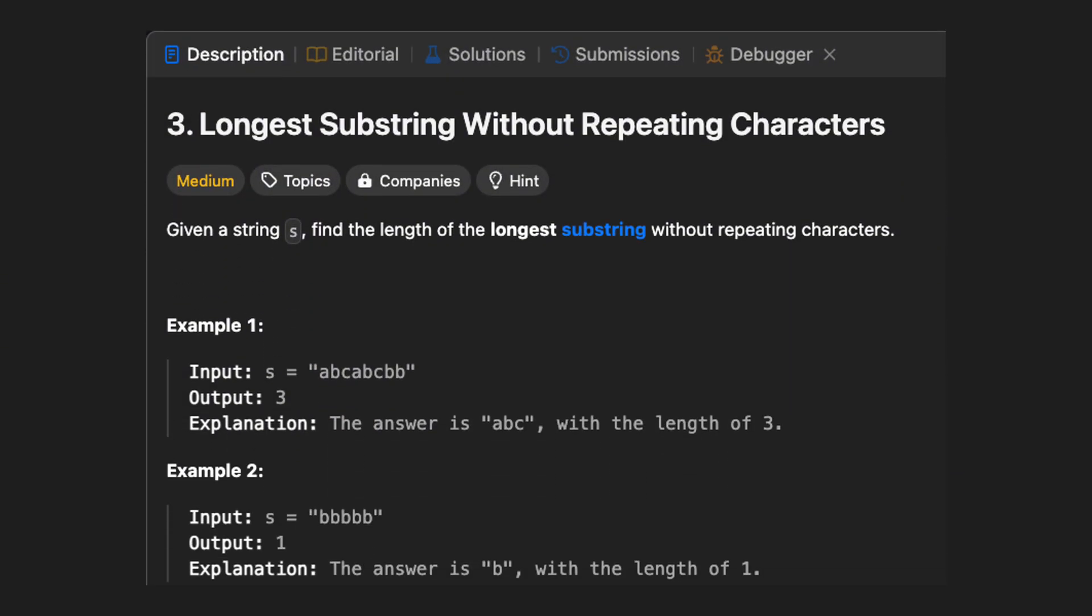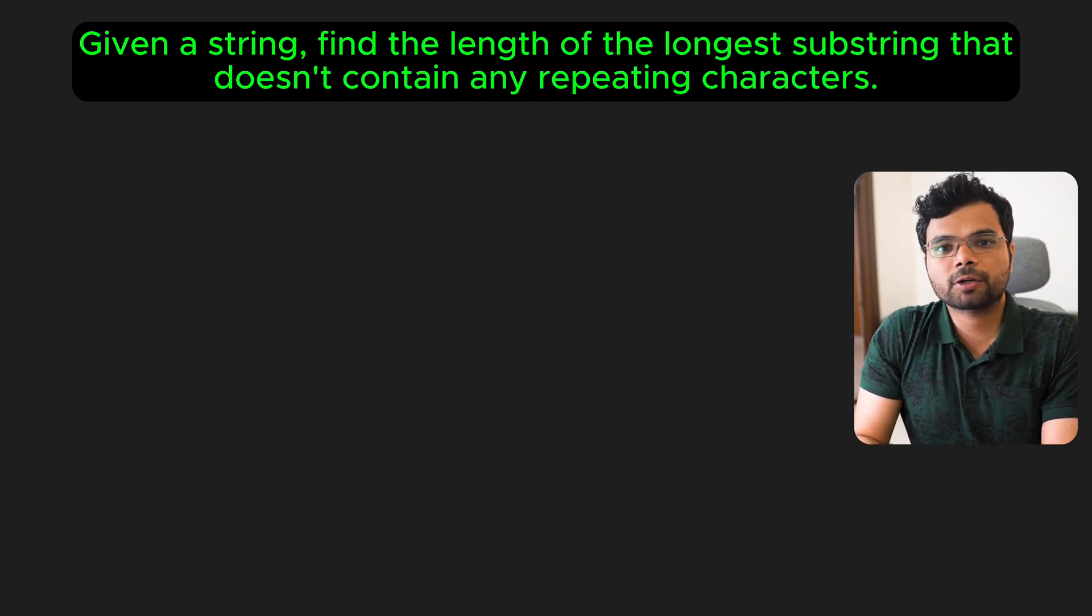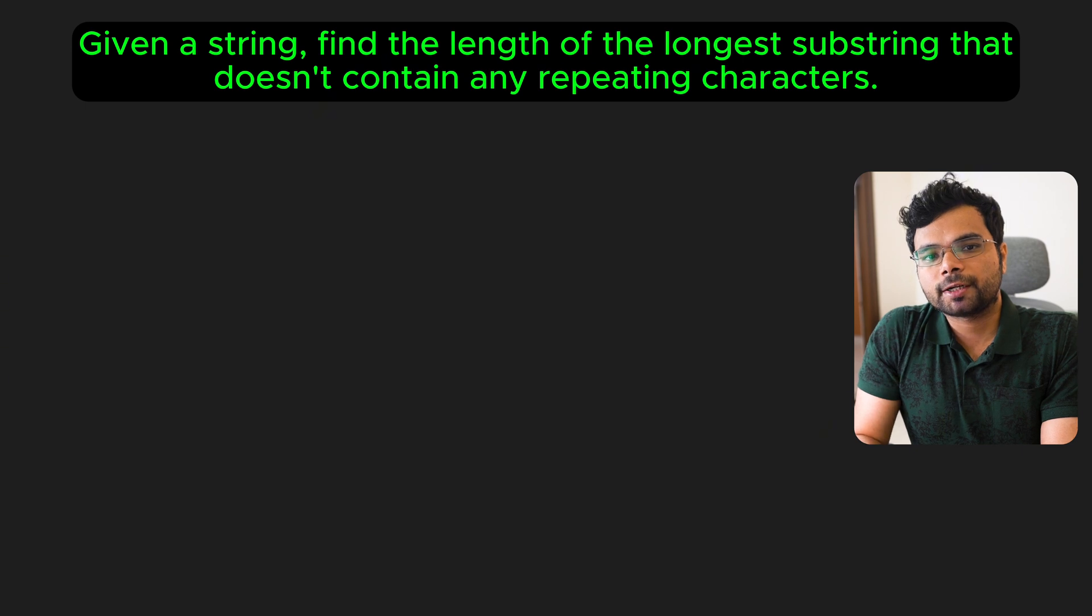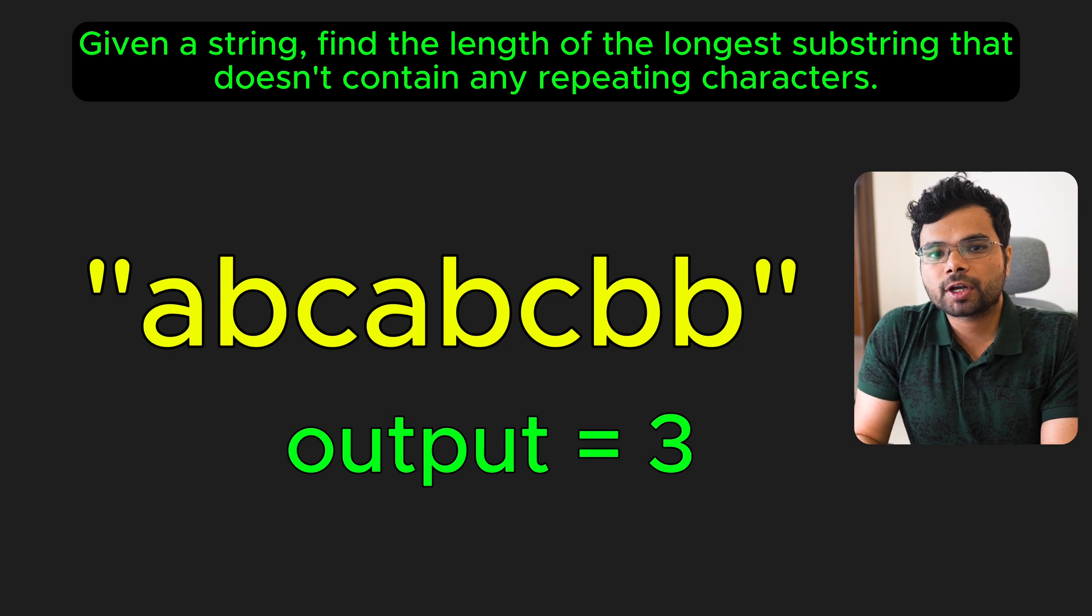LeetCode 3, longest substring without repeating characters. You are given a string and find the length of the longest substring that doesn't contain any repeating characters. In other words, the longest substring must contain only unique characters. For example, if the input string is this, the output is 3, since the longest substring without repeating characters is ABC with a length of 3.